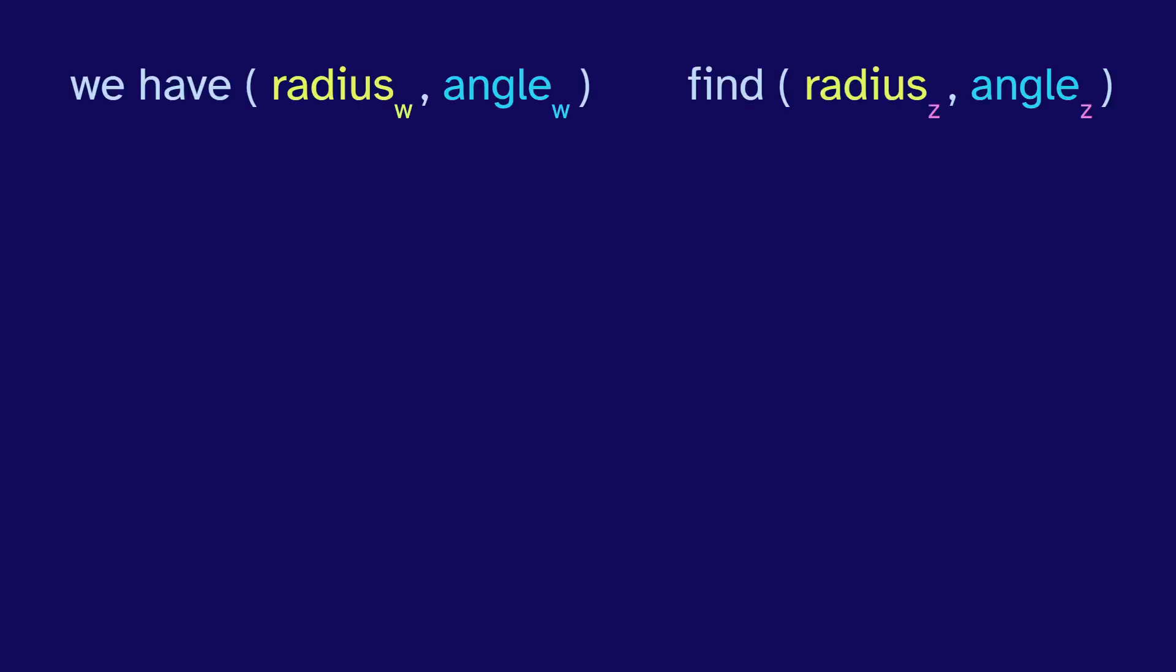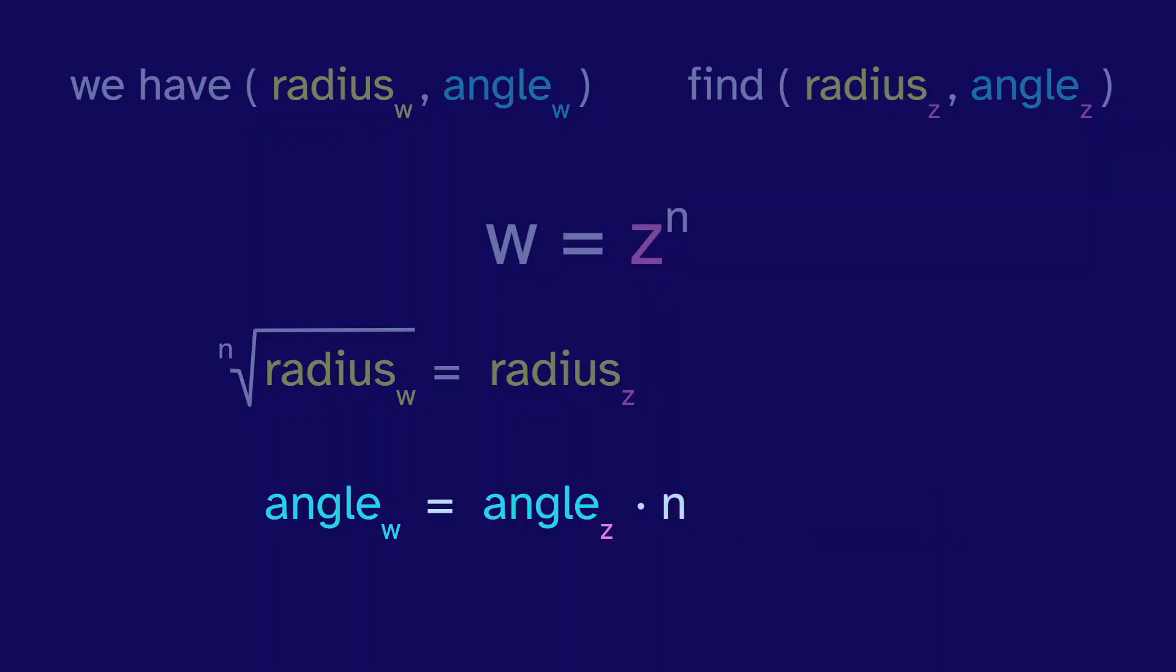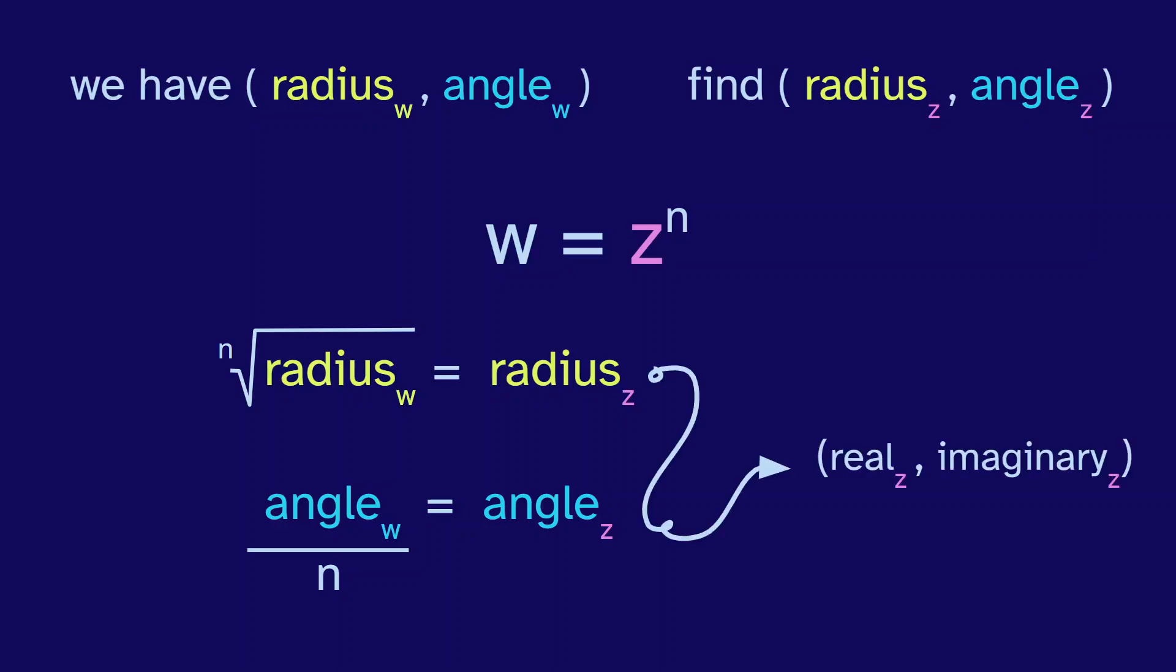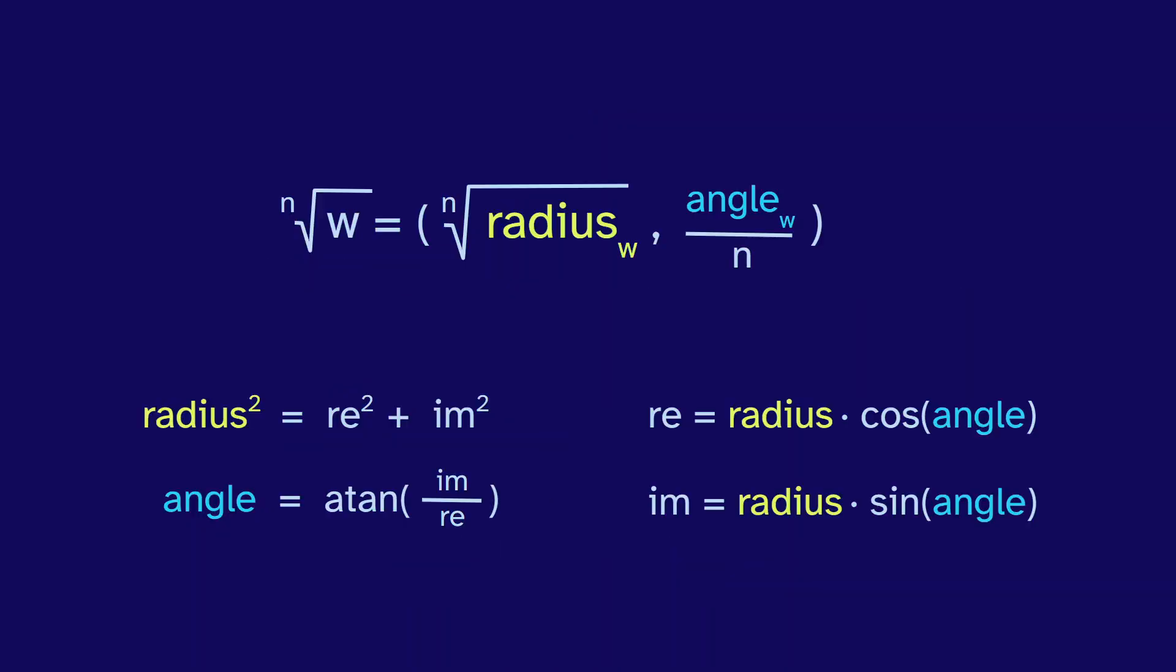So now we have a radius and angle for w. Let's find the radius and angle for its root z. So using the rules from polar coordinates, we multiply the radii and add the angles. Z's radius to the n should be w's radius. We have to solve another root problem. But actually, the radius is always a real number, so we can just take the real nth root. The angle is easier. We just get the angle of z as the angle of w over n. Great. Now we have the radius and angle for z. But maybe we want to convert back into real and imaginary. We can split the angle into its sine and cosine, and then scale by multiplying by the radius. And there we go. That is how you calculate a complex root.